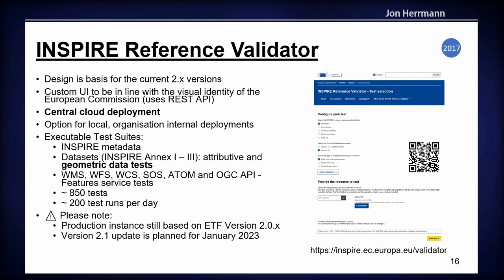All this is included in the current version 2 line and in the INSPIRE Reference Validator. The INSPIRE Reference Validator uses its own custom UI because it needs to align with the European Commission's style. It uses the REST interface with a custom UI built on top. It's a central deployment running about 200 tests a day, with about 850 tests implemented. Note that the production instance still uses version 2, and an update is planned for January.